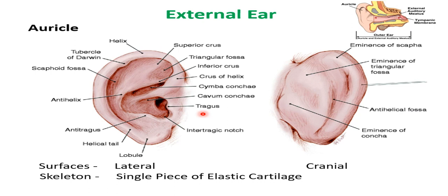The two parts of the external ear are the auricle and the external acoustic meatus. The auricle has a lateral surface with elevations and depressions, and a cranial surface with corresponding eminences. The outer rim is called the helix, starting at the crus of the helix. Parallel to it is the anti-helix, which divides superiorly into a superior crus and inferior crus with the triangular fossa between them. Between the anti-helix and helix is the scaphoid fossa.